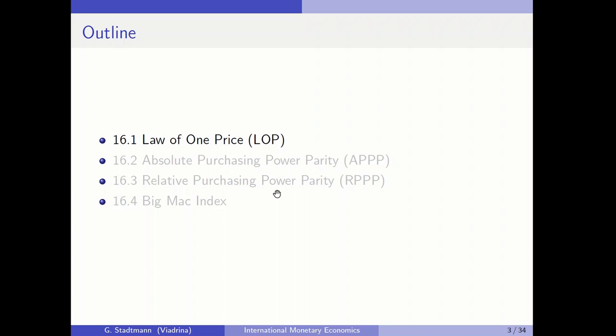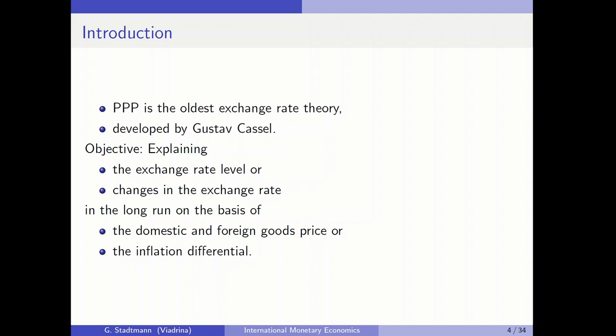Purchasing power parity is one of the oldest exchange rate theories. The objective of this theory is to explain the exchange rate level based on the domestic and foreign goods price level, or to explain changes in the exchange rate by the inflation differential — the inflation rate in the domestic economy and the inflation rate in the foreign economy.